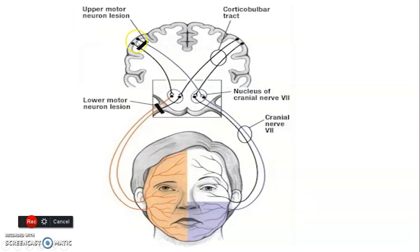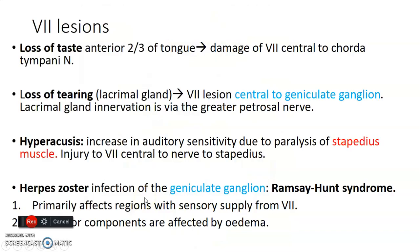To summarize: an upper motor neuron lesion spares the upper face and gives contralateral lower facial muscle paralysis, while a lower motor neuron lesion gives ipsilateral facial muscle weakness. Facial nerve lesions also cause loss of taste in the anterior two-thirds of the tongue via the chorda tympani, and loss of tearing from the lacrimal gland when the lesion is central to the geniculate ganglion, affecting the greater petrosal nerve.